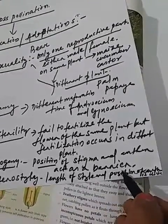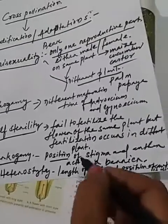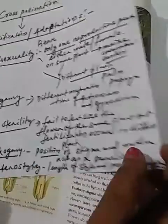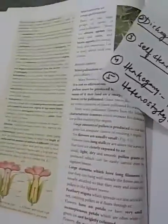The fourth one is herkogamy, which means the position of the stigma and anther act as a barrier. That means the position is different.